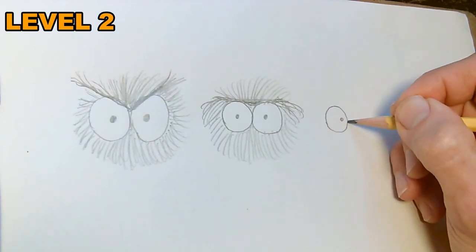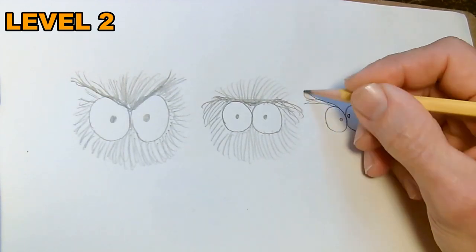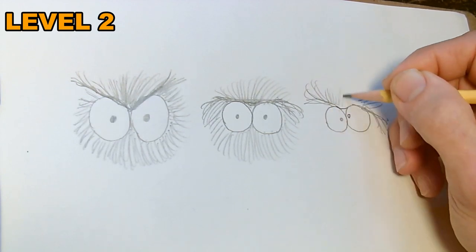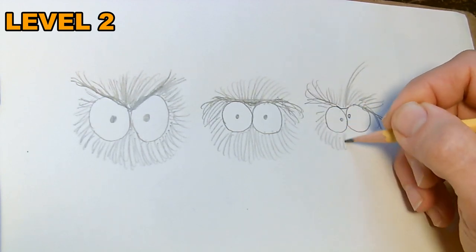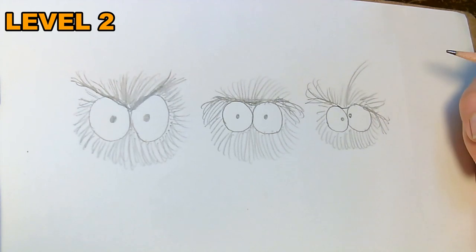Let's try a third one. We'll give it goofy eyes pointing in different directions. We'll make the eyebrows point in different directions, and then the fur—we can do long fur, short fur. That's got some character to it, and you can see the difference in these level two monsters.